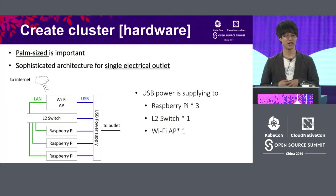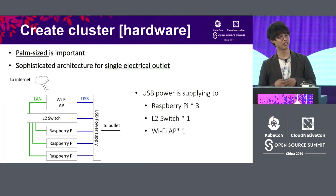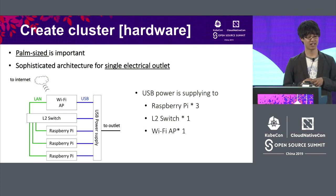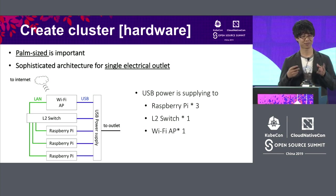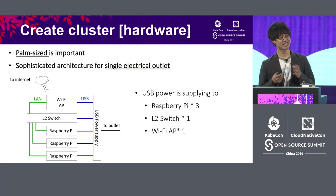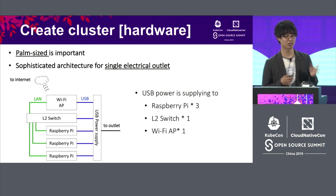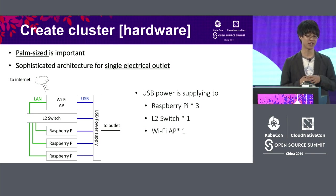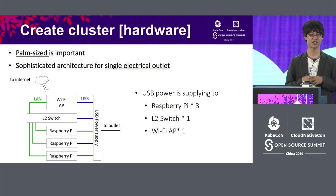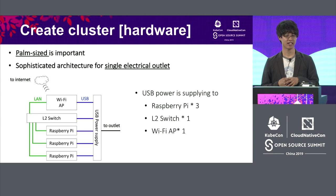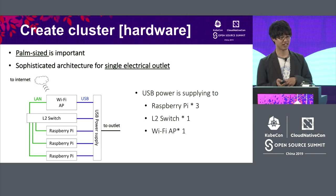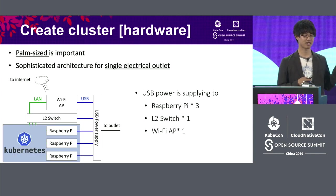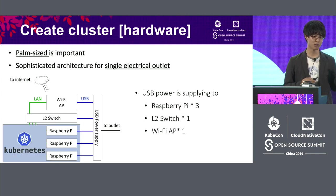First step: we need to build a hardware cluster. I think palm-size and a single power outlet is important, so we decided to use USB power supply. Then, we install Kubernetes onto Raspberry Pi.